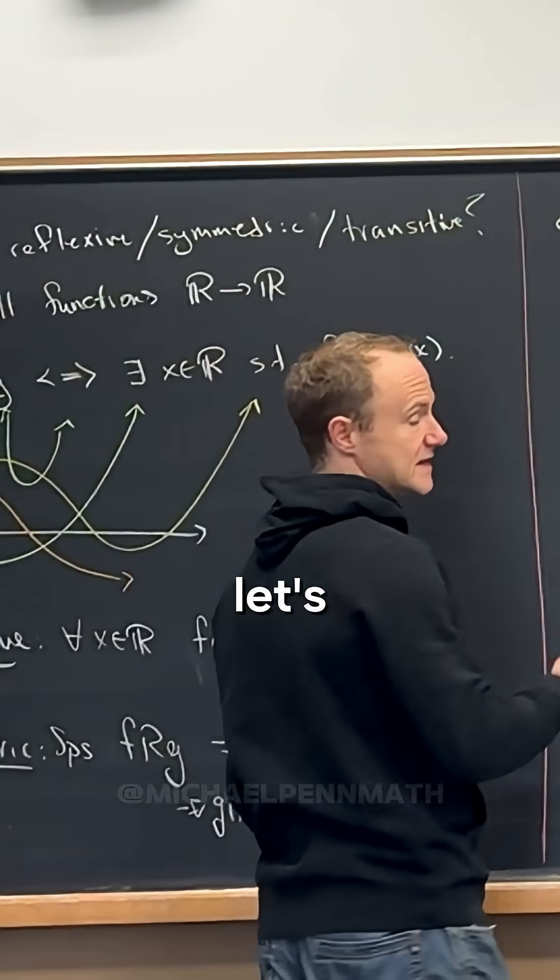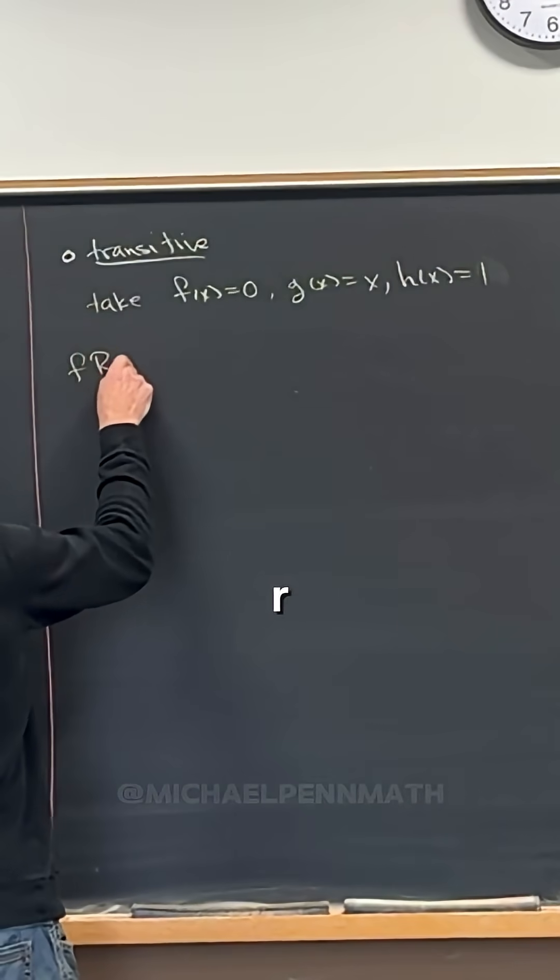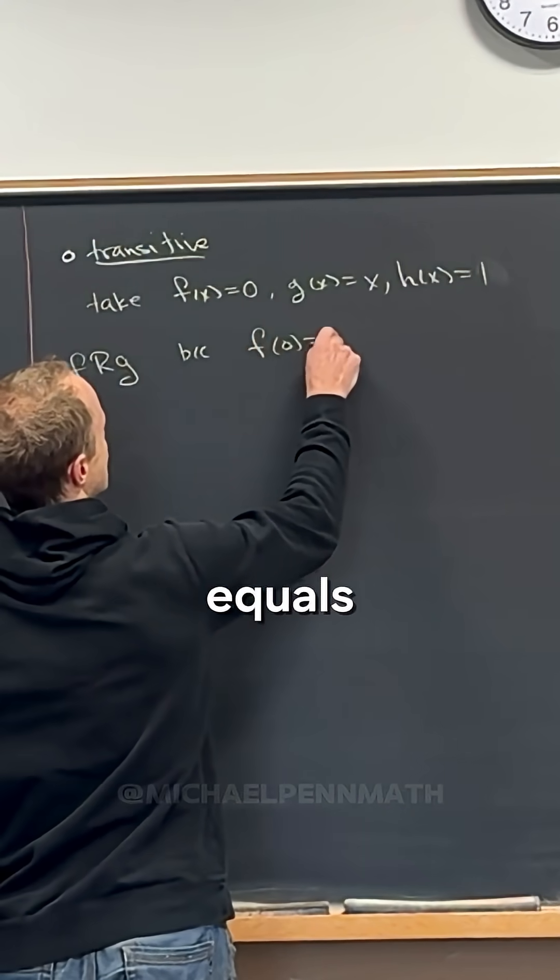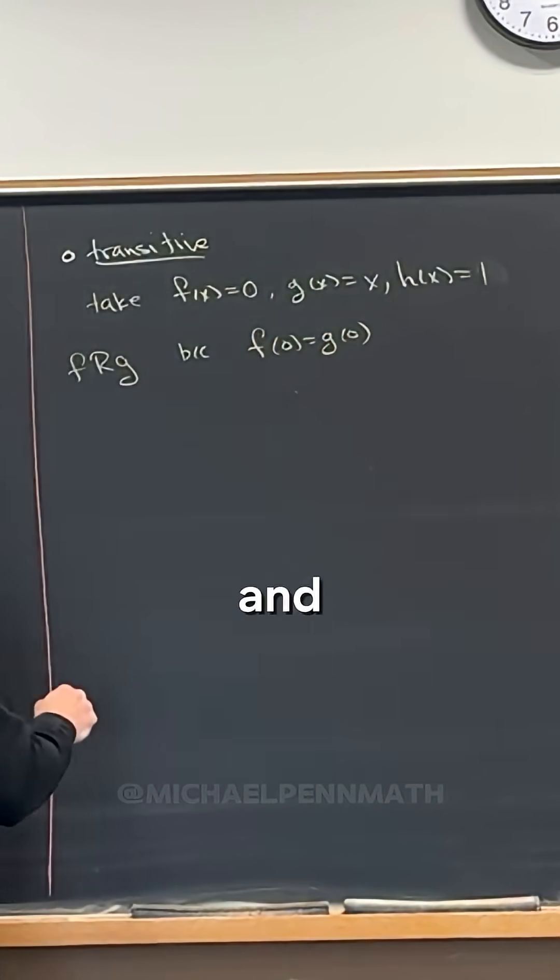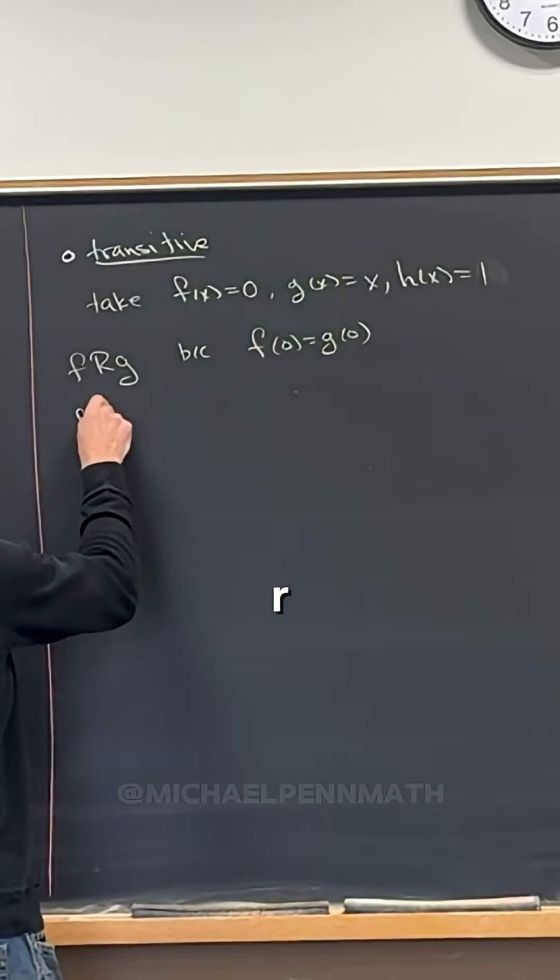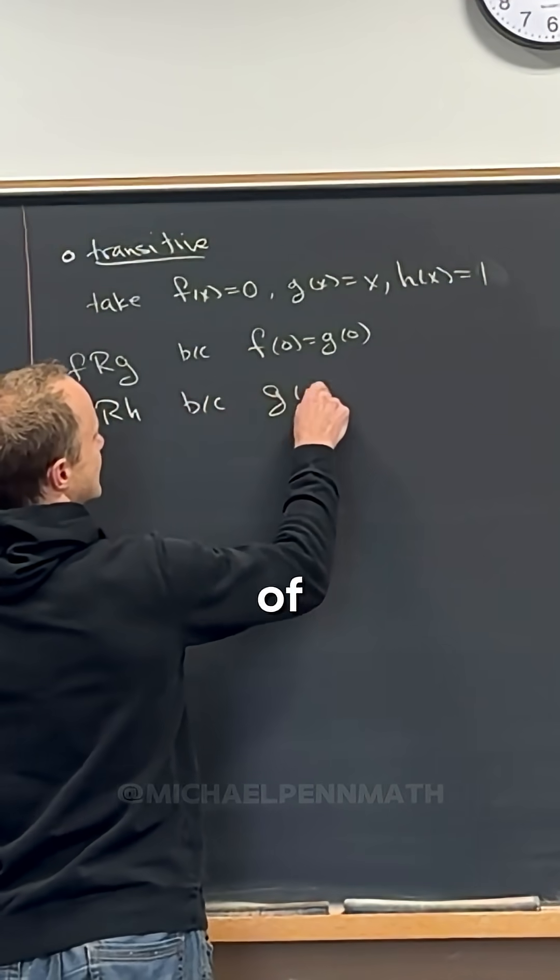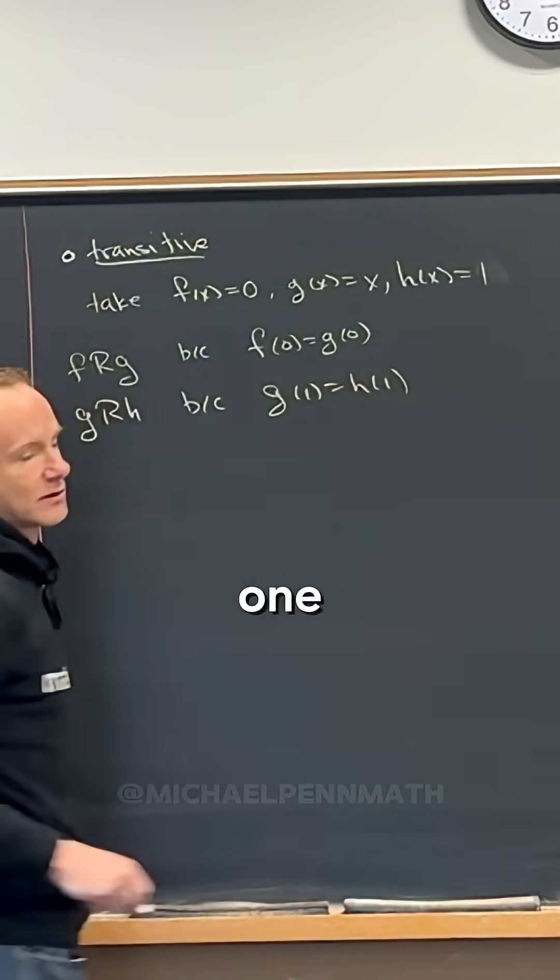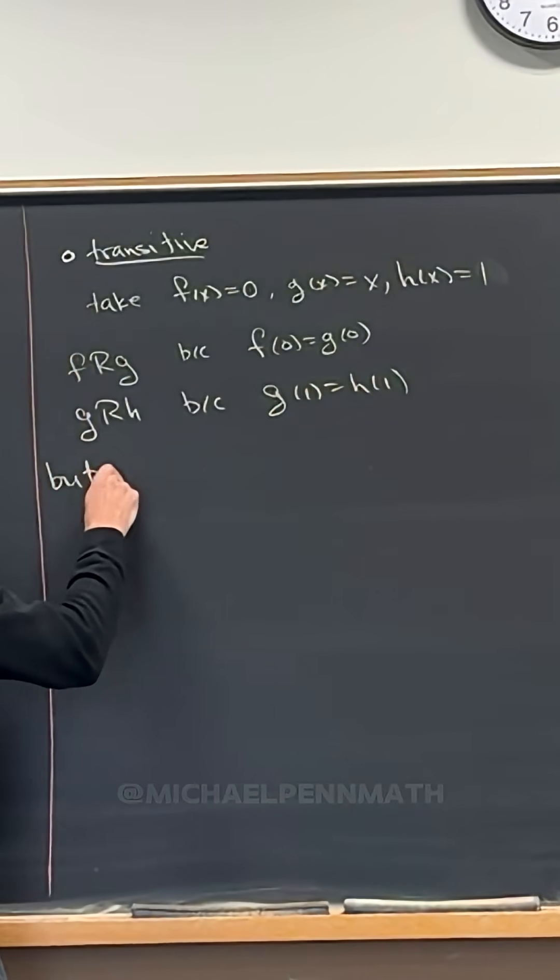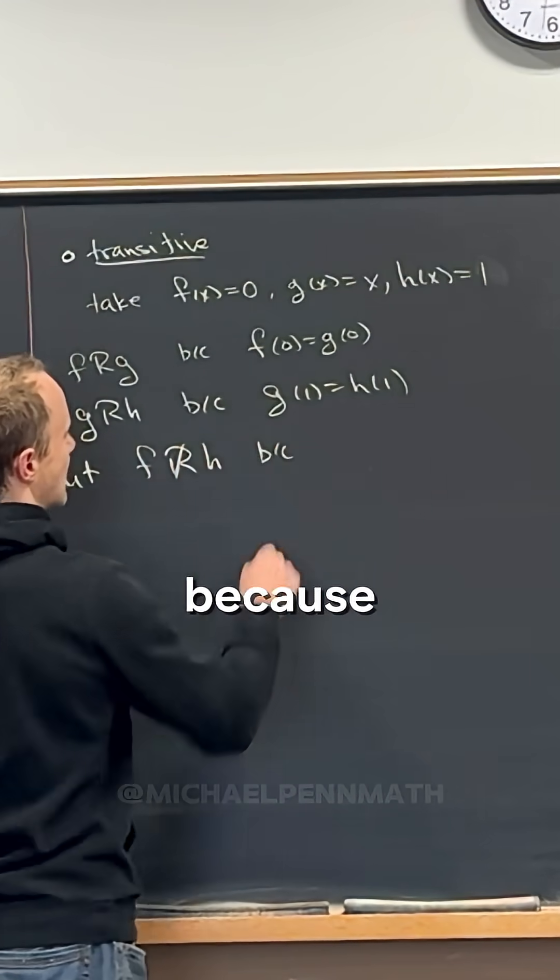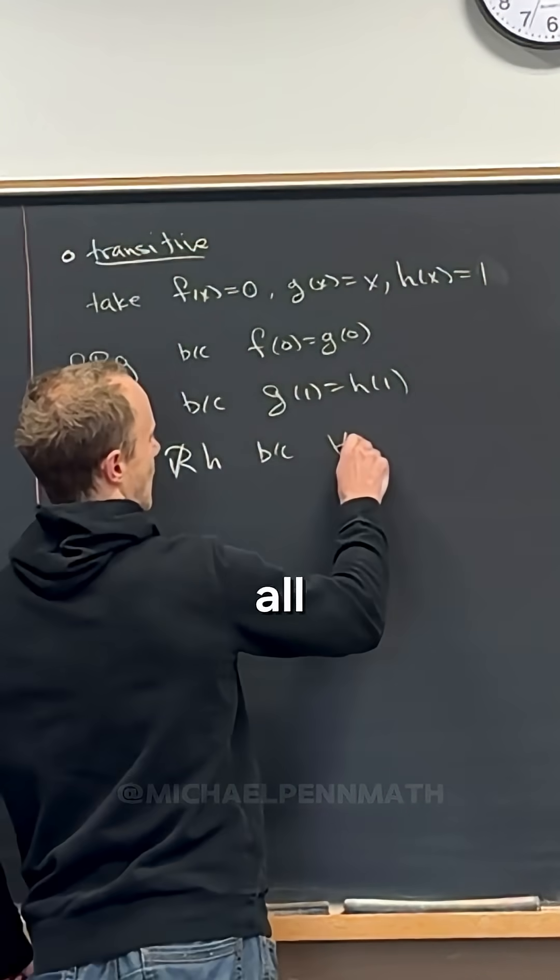Right, and then let's note that f R g because f of zero equals g of zero. Right, and let's notice that g R h because g of one equals h of one. Right, but we have f not R h because for all real numbers x...